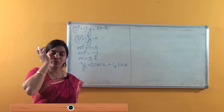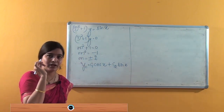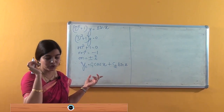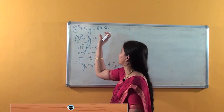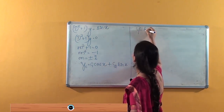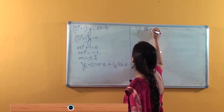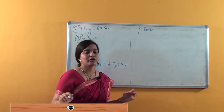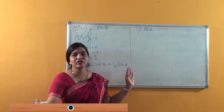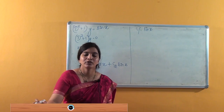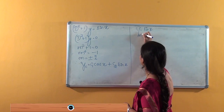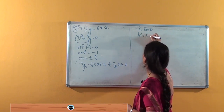The next step is to find the particular solution. We consider the RHS of the equation, which is sin x. As discussed in previous classes, we identify the corresponding roots for the forcing function, and we get m′ = ±i.